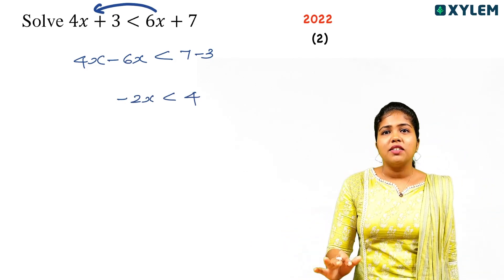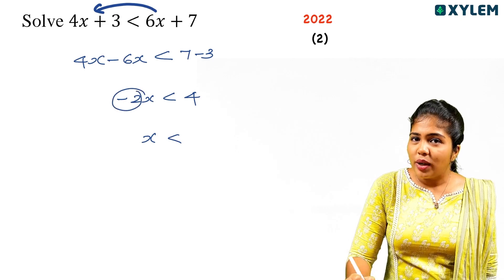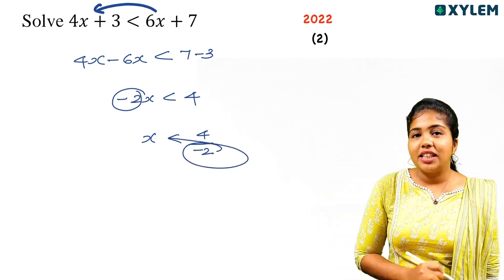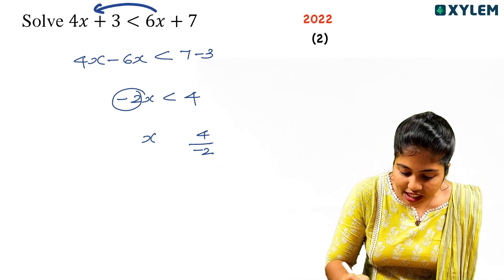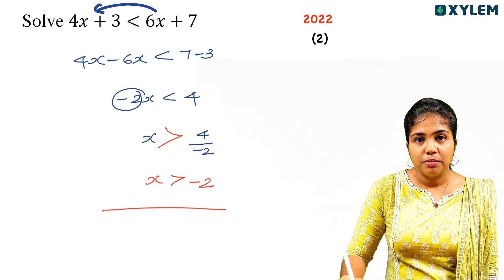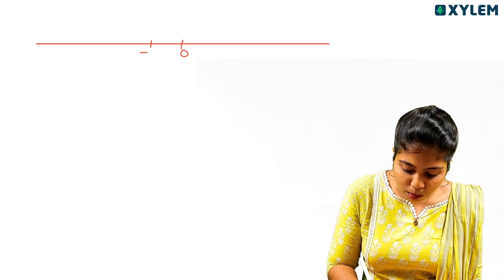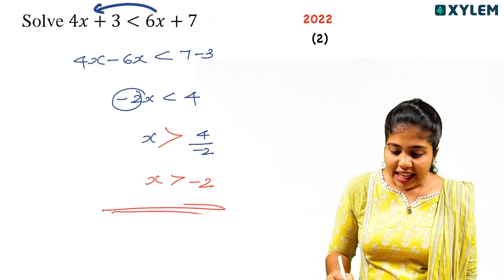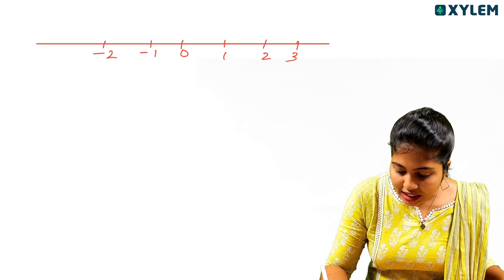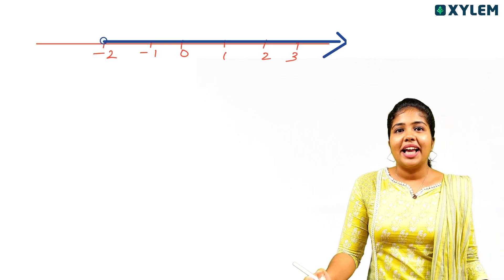We have minus 2x less than 4. If you divide by minus 2 — a negative number — you must flip the sign. So x is greater than 4 divided by minus 2, which is x greater than minus 2. That is the solution.